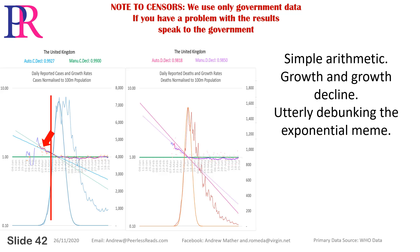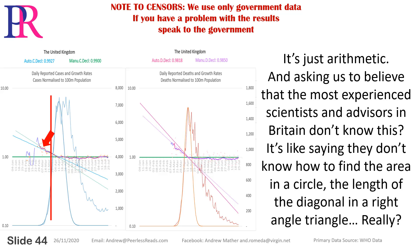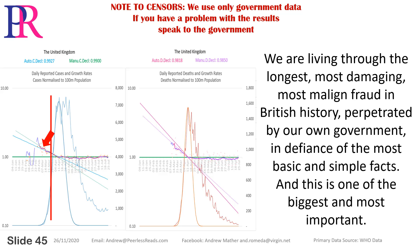And yet Vallance and Whitty have the temerity, six months later, to present an exponential virus. Simple arithmetic — growth and growth decline — utterly debunking the exponential meme. Every use of the term exponential to support COVID measures, or any reference to 'keeps growing,' 'continues unabated,' etc., is fraud. Criminal fraud. It's just arithmetic. Asking us to believe that the most experienced scientists and advisors in Britain don't know this is like saying they don't know how to find the area of a circle or the length of the diagonal in a right-angle triangle. We are living through the longest, most damaging, most malign fraud in British history, perpetrated by our own government in defiance of the most basic and simple facts.